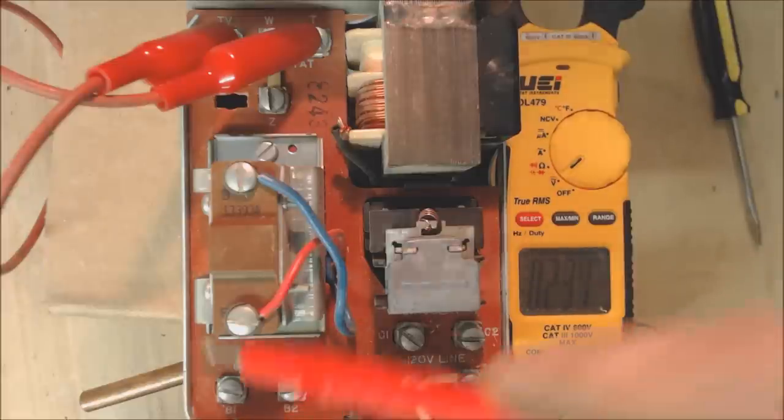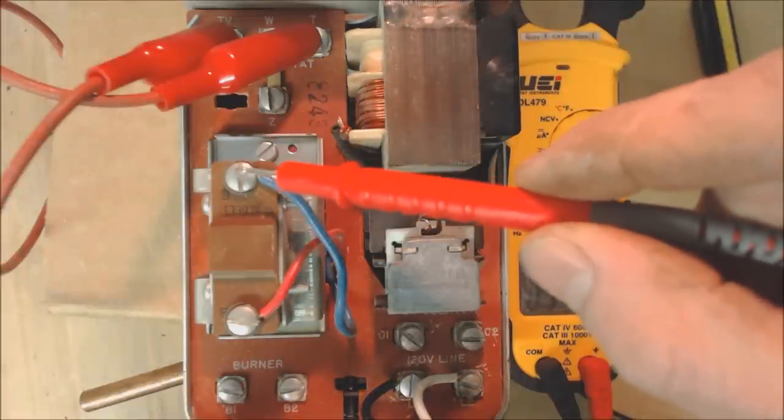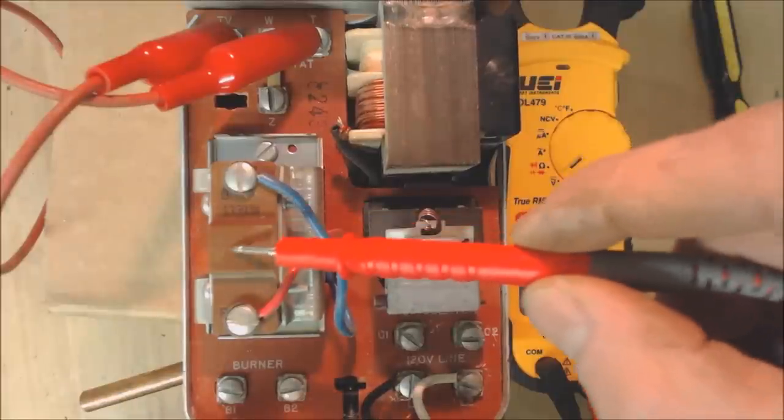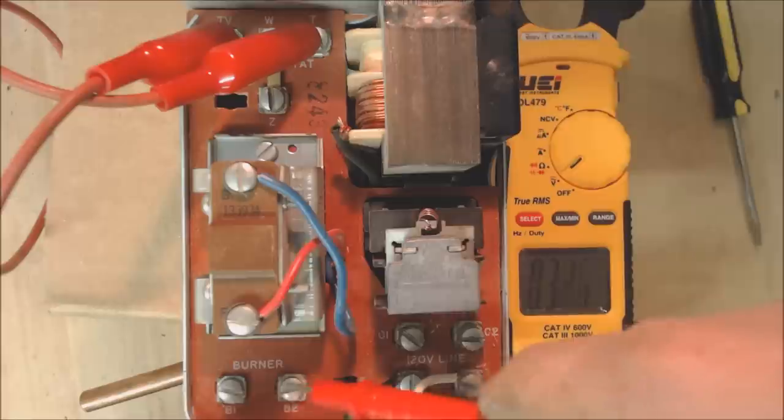I'll show you how that works. I'll disconnect this one wire and we'll read 24 volts between here and here, but we won't read 24 volts between here and here. That means we need this switch to close in order for this burner to turn on.